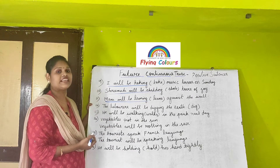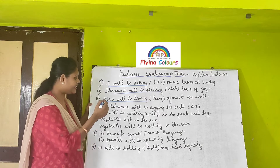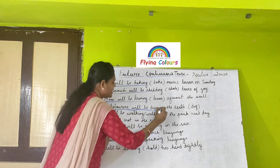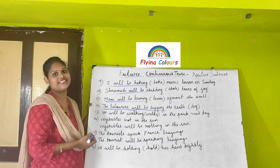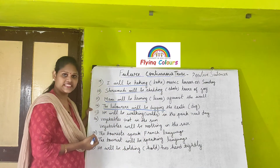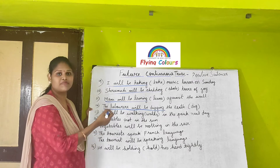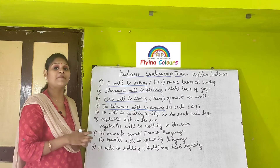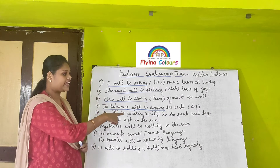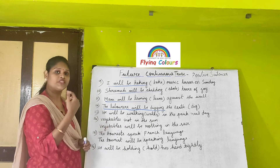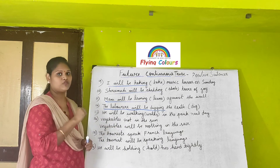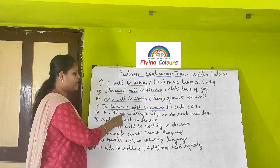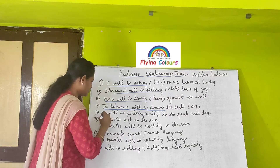Next: 'The laborers will be digging the earth.' The main verb is 'dig.' The laborers is the subject, plus will plus be plus 'digging' as the present participle. Then: 'He will be walking in the park next day.' In academic exams, they may give the main verb in brackets and ask you to fill in the future continuous tense. So 'he will be walking' is the answer.